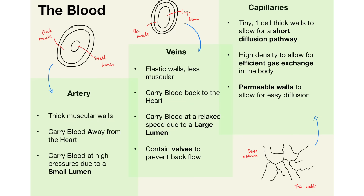There are three main blood vessels: the artery, the vein and the capillary. Here are some properties of each of them to help you remember.